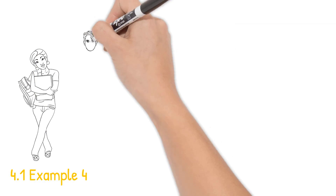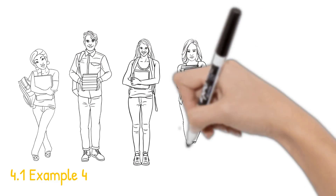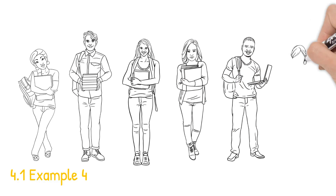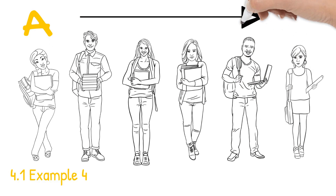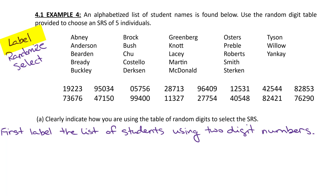Example 4.1, Example 4. An alphabetized list of student names is found below. Use the random digit table provided to choose an SRS of five individuals. On your AP exam, you may be given a situation like this and asked to use a random digit table to select an SRS. The three big ideas that you'll make sure to include are labeling, randomizing, and selecting.